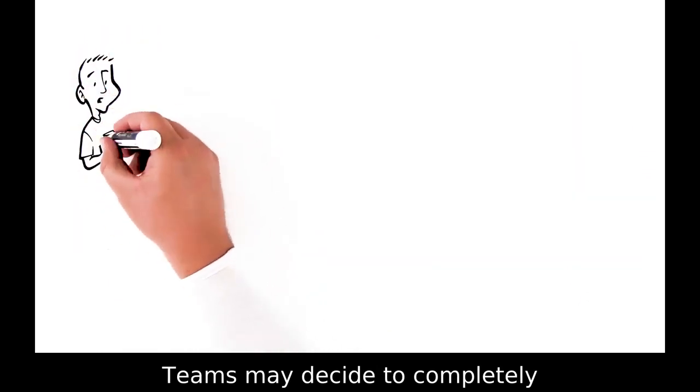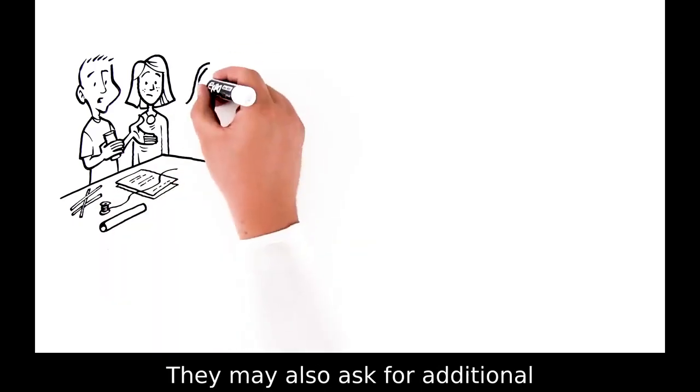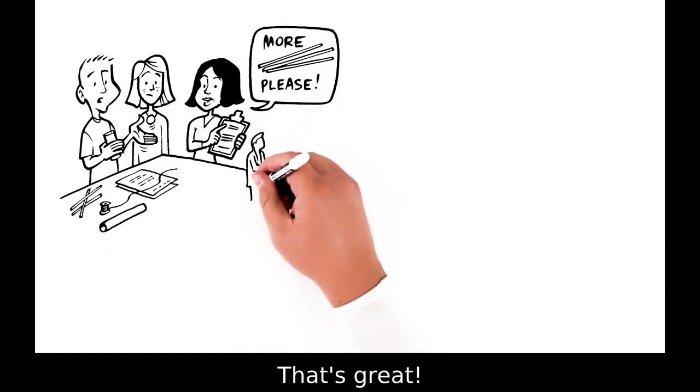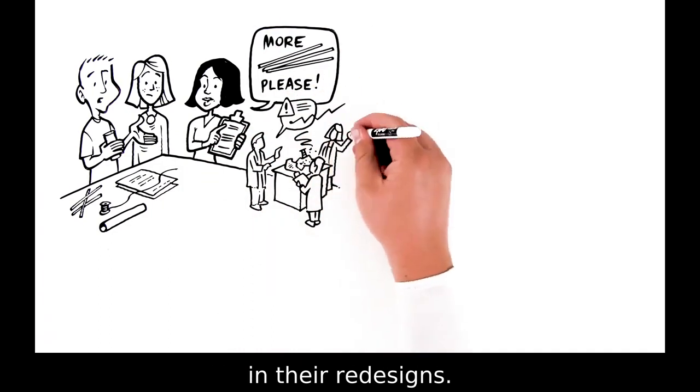Teams may decide to completely change their design when in the manufacturing phase. They may also ask for additional materials or try different solutions as they build. That's great. Engineers learn from failure and then apply what they learned in their redesigns.